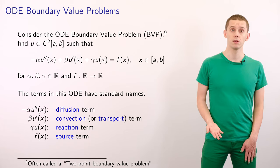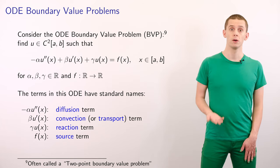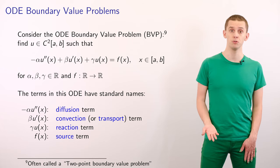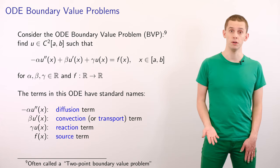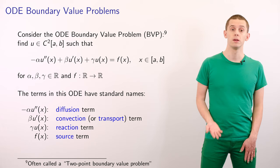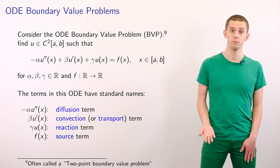Because of this, the terms in this equation have names that derive from this particular problem. We call minus alpha u double prime the diffusion term, beta u prime the convection or transport term, gamma u the reaction term, and f of x the source term.